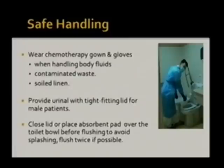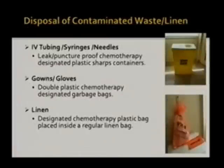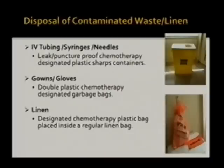When flushing the toilet after disposal of body fluids, since some toilets might not have lids, we usually put an absorbent pad over the toilet and flush twice if possible to avoid any splashing outside the toilet bowl or onto the healthcare provider. The yellow container pictured is specially made for chemotherapy sharps — it is not similar to a regular sharps container; it is leak-proof and puncture-proof. Below you can see the orange bags.